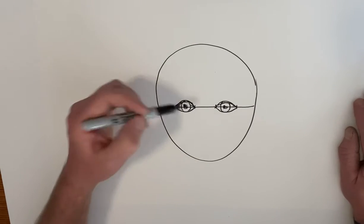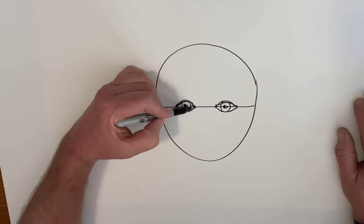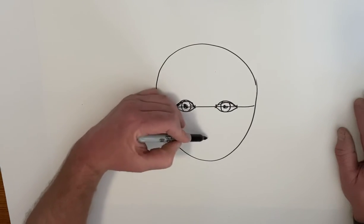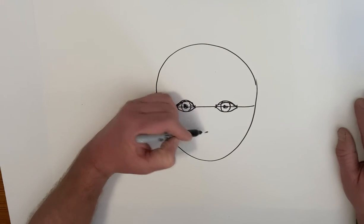The nose goes halfway from the eye line, this halfway mark, to the chin. So halfway between there, approximately, is where on most people the nose is.